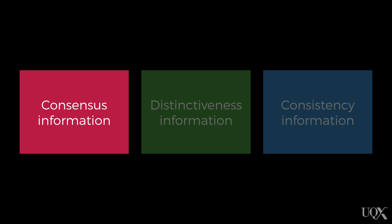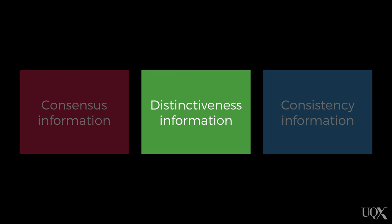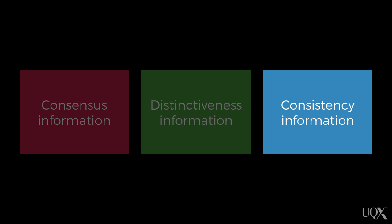The first of these is consensus information, which is whether other people perform the same behaviour or not. The second type of information is distinctiveness information, and this is whether the behaviour is only performed towards this particular target or person, or whether it is performed towards other targets as well. The final type of information that helps us make an attribution according to this model is consistency information, which is whether the behaviour is performed all the time or not. The three types of attributions that we could make using this information are a person attribution, a target attribution, and a situational attribution.